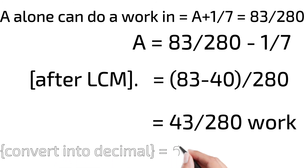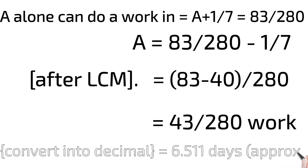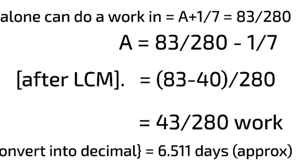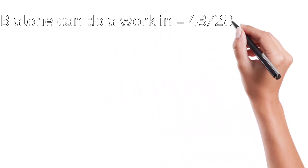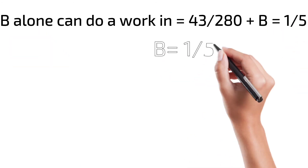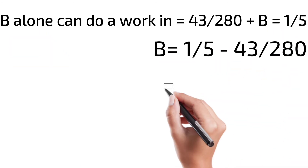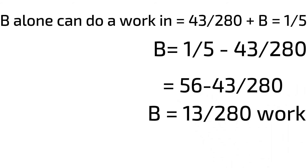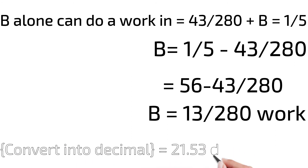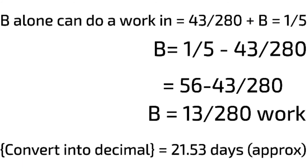To convert to time, we can take the reciprocal, but let's write it in decimal. So 1/5 equals 43 by 280 — this is why it is taken, because A's value was given. So 43 by 280, and when converted, gives approximately 21.53 days for B alone.